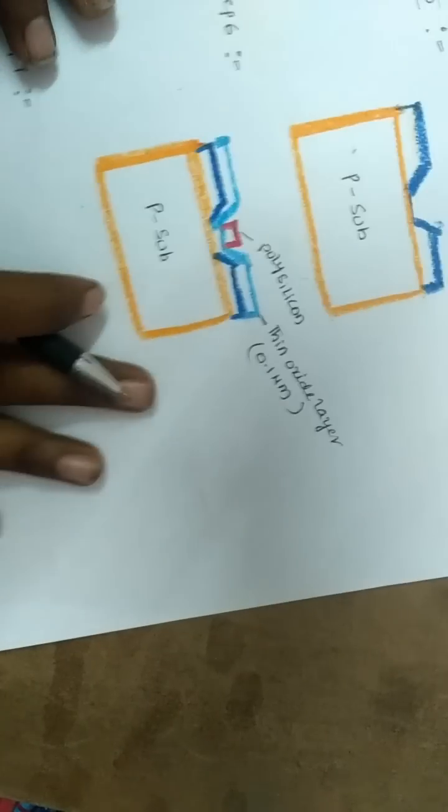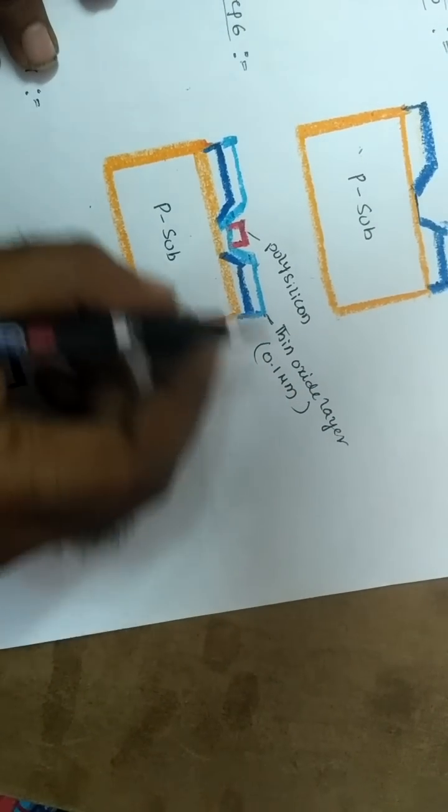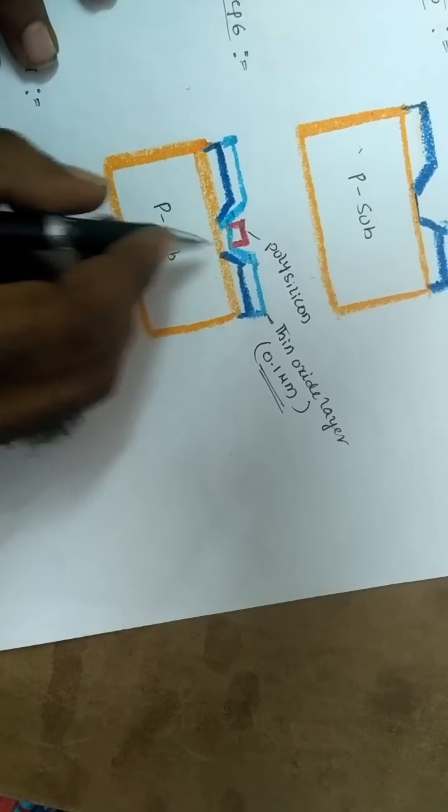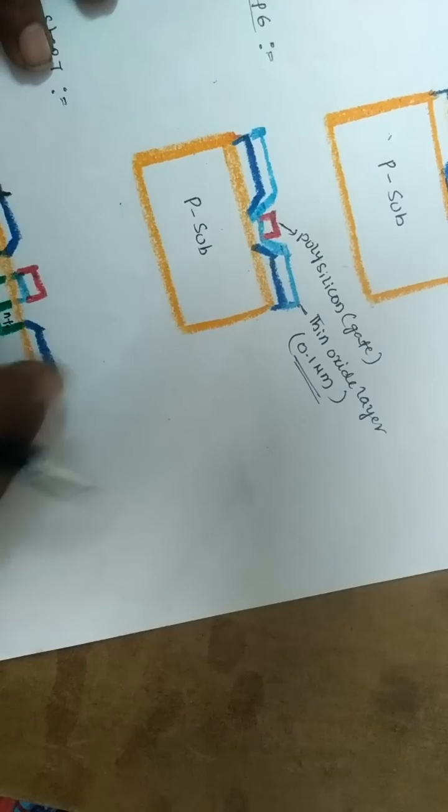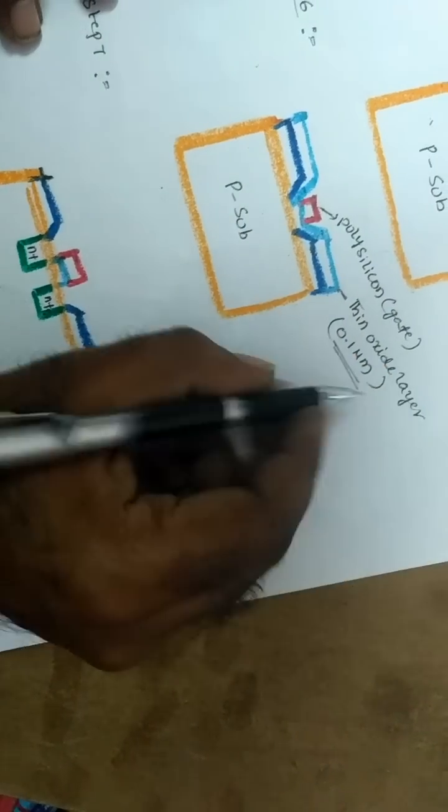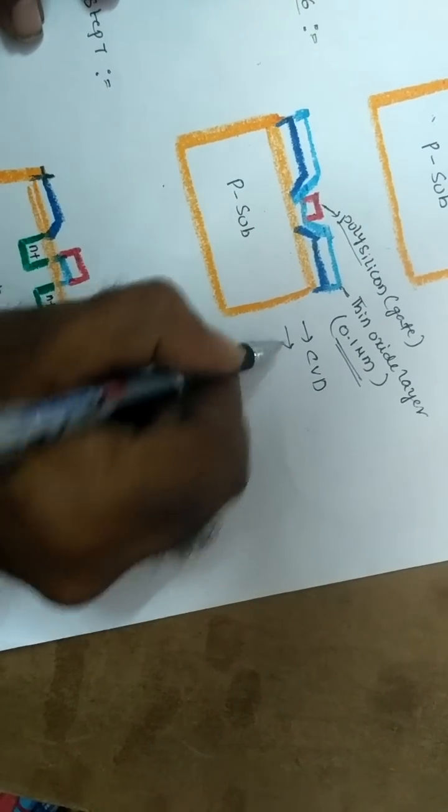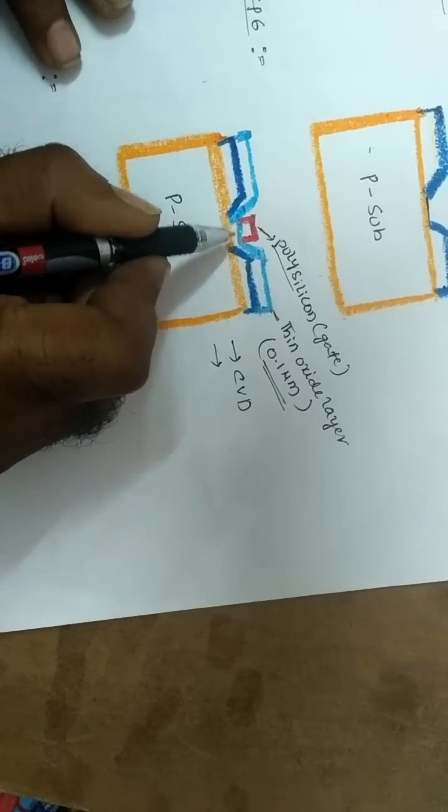Step 6: The remaining photoresist is removed by hot sulfuric acid. A thin layer of silicon dioxide, 0.1 µm thick, is grown over the entire surface which will form the gate oxide of the MOS transistor. A layer of heavily doped polysilicon is deposited on top of the thin oxide by chemical vapor deposition (CVD) technique. After deposition, a mask defining the gate is placed over photoresist and exposed to UV radiation. As a result, the polysilicon over the portion excluding the gate region is etched away.